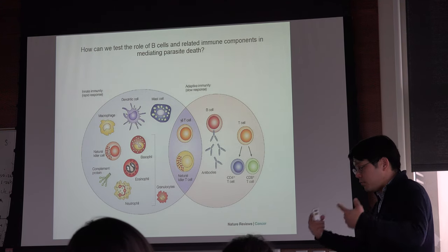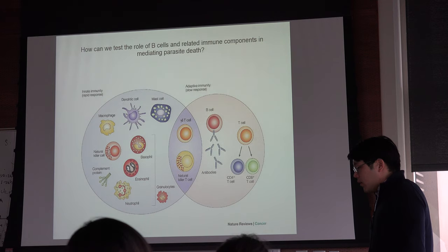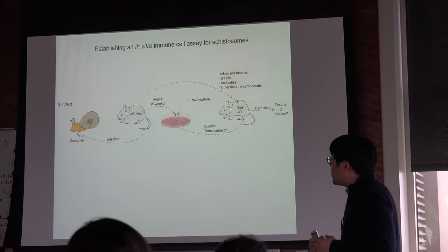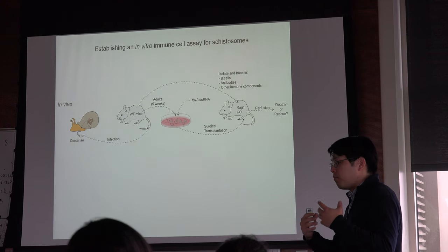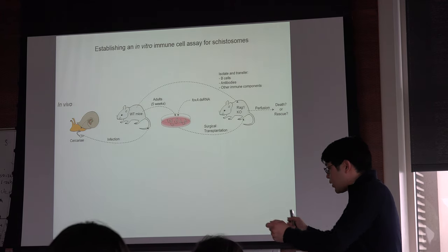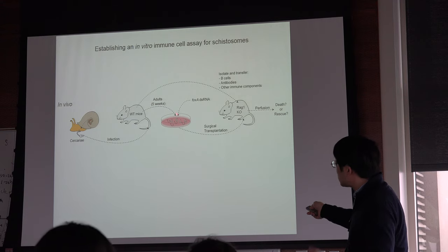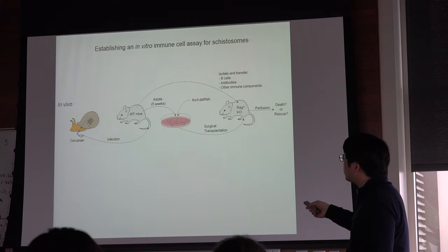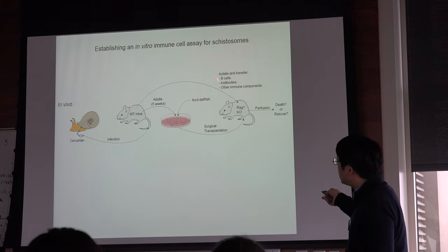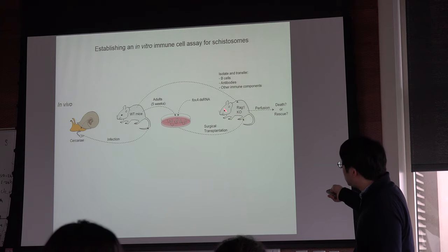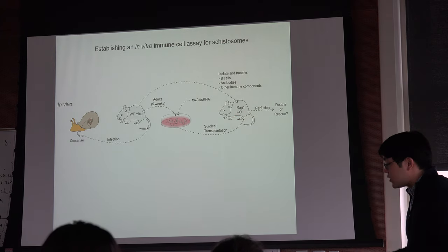I want to dig deeper into this, and a combination of in vivo and in vitro approaches might work really well. In the future, I am hoping to establish in vitro assay conditions for these immune cells or components. We can knock FOXA down, do the transplantation into RAG1 knockout mice, but also isolate from infected mice the B cells, antibodies, or other immune components we want to test, purify them, and transfer them back into the RAG1 knockout mice that received the FOXA RNAi parasites — to see whether you still observe rescue or parasite death.